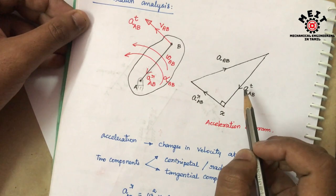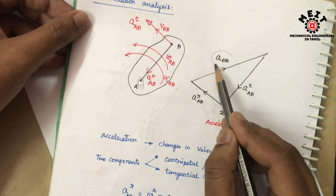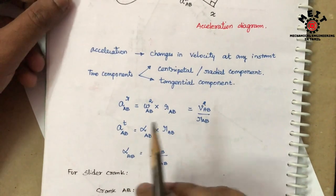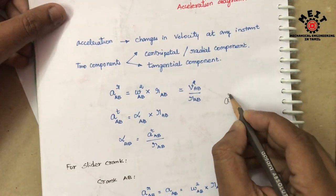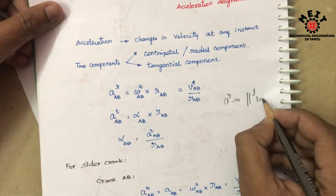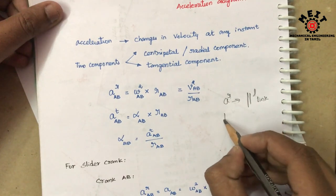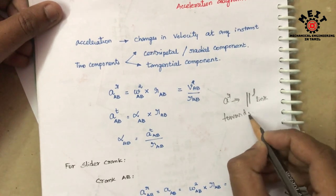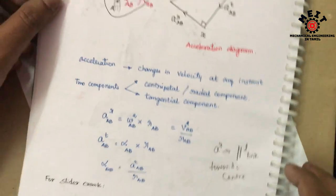So this is the radial component, and this is the tangential component. The resultant is the original acceleration value. How do we know the characteristics of the radial component? The radial component is parallel to the link. And it will always move towards the center — towards the fixed center point.